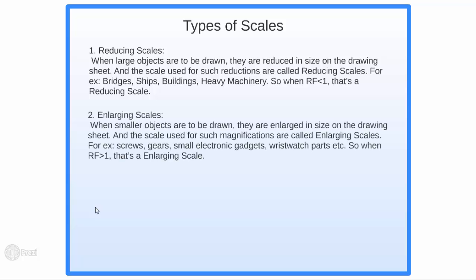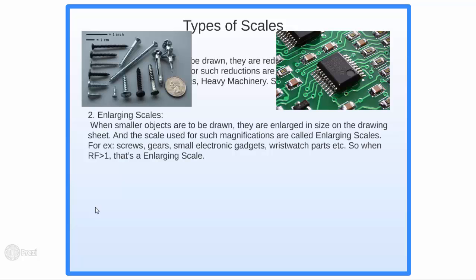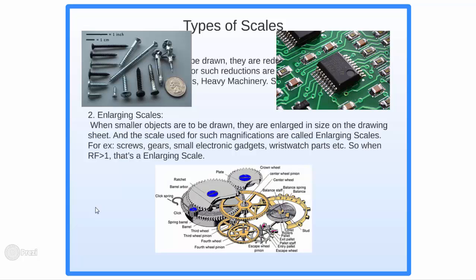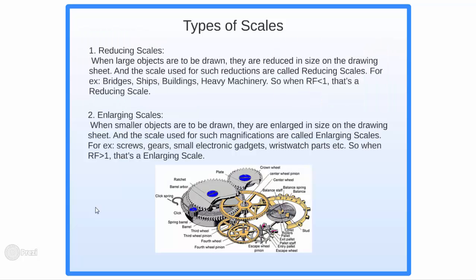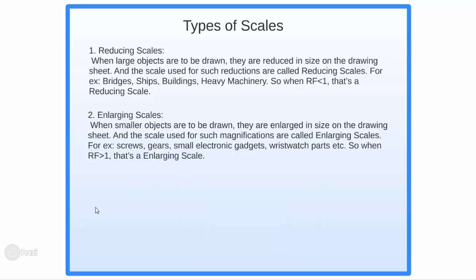The second scale that I'm going to talk about is what you call an enlarging scale and it's used to prepare drawings of very small objects like screws, small electronic gadgets, wristwatch parts. Here the length on drawing is greater than the actual length and hence RF is going to be greater than 1.